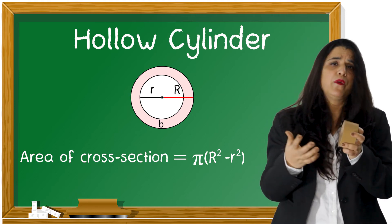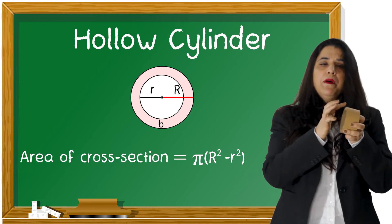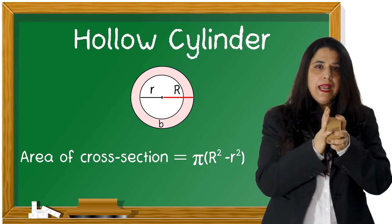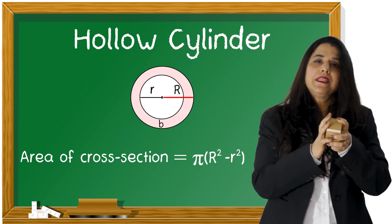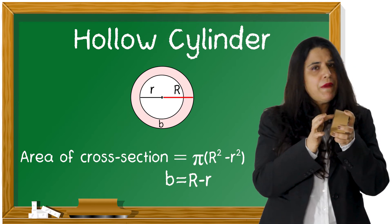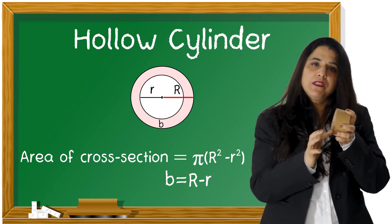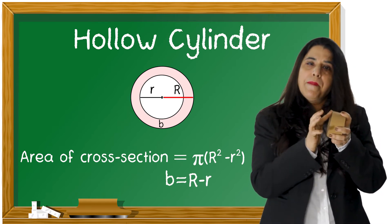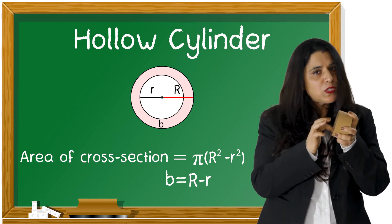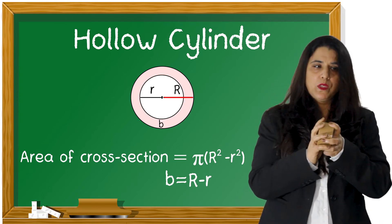Mensuration is all about applying — how are you going to apply it in your daily life. So once again: what is the thickness? Thickness is capital R minus small r. And what is area of cross section? Pi into capital R square minus small r square.